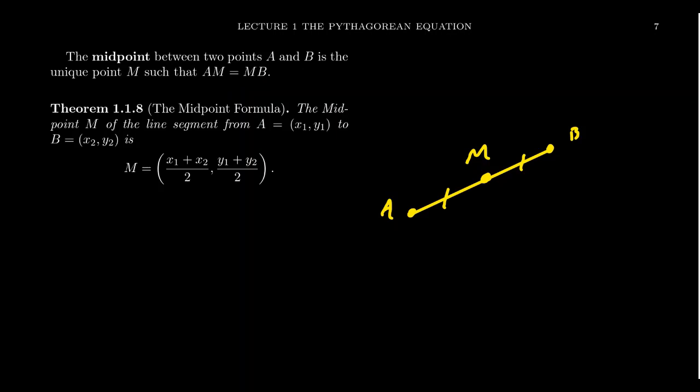Now, the formula for the midpoint is quite natural. If we have coordinates for A and B, let's say A has the coordinates X1, Y1, and let's suppose B has the coordinates X2, Y2.